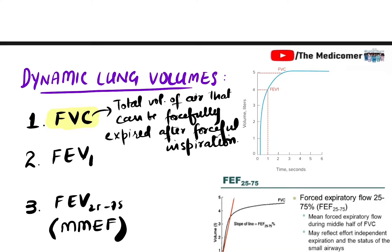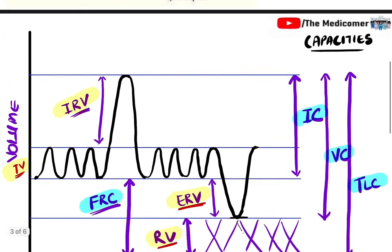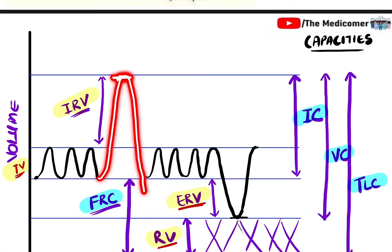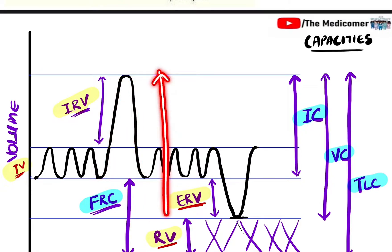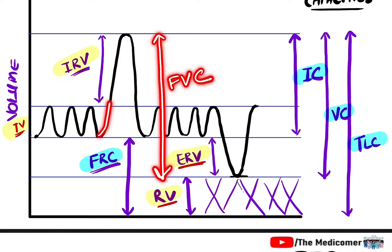First, the person performs forceful inspiration — inspiring normally and then forcefully until reaching the inspiratory reserve volume. Then the person has to expire using maximum effort, which is forceful expiration. This includes the inspiratory reserve volume plus tidal volume, and the person can also forcefully expire the expiratory reserve volume. This whole volume is called the FVC — the forced vital capacity.